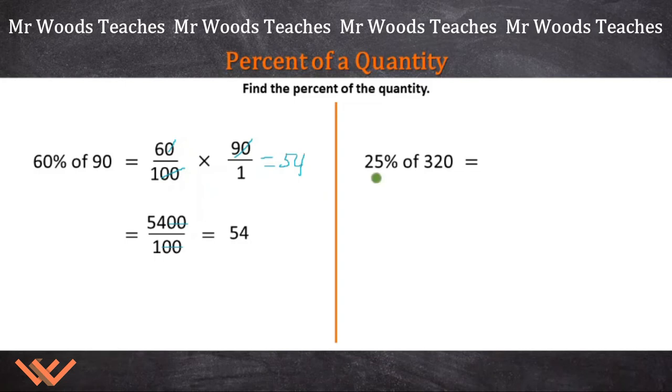Let's take a look at the next problem. Here I have 25% of 320. We do the same thing that we did before. It's going to be 25 over 100, and we're multiplying that by 320 over 1. And we're going to find out what that is.